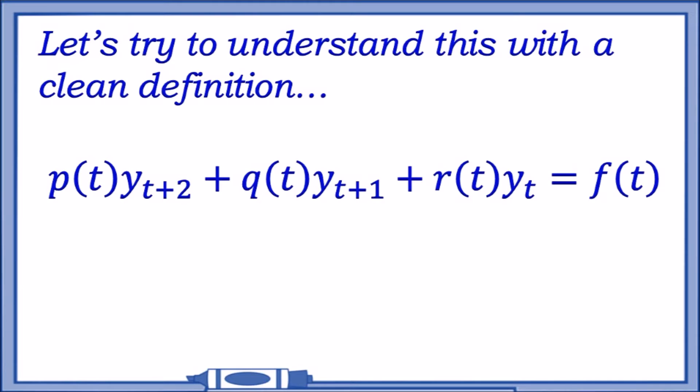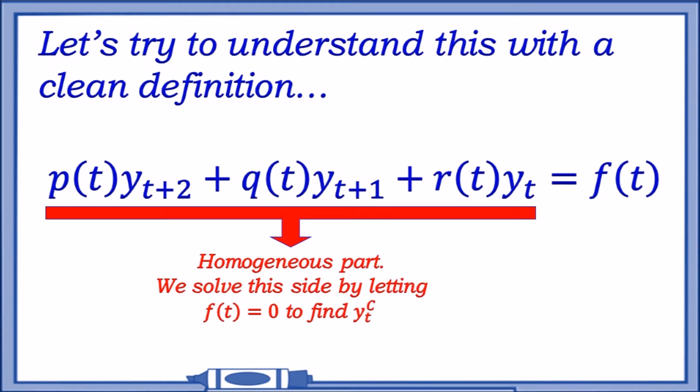We have y(t+2), y(t+1), and y(t). This is simply the second order of y(t), just goes up to the second order. What are we really concerned about? Well, the left-hand side, which is the homogeneous part.